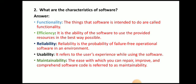The next question: what are the characteristics of software? The characteristics are functionality, efficiency, reliability, usability, and maintainability. Functionality refers to the things the software is intended to do. Efficiency is the ability of the software to use provided resources in the best possible way. Reliability is the probability of failure-free operational software in an environment. Usability refers to the user experience while using the software. Maintainability is the ease with which you can repair, improve, and comprehend the software code.